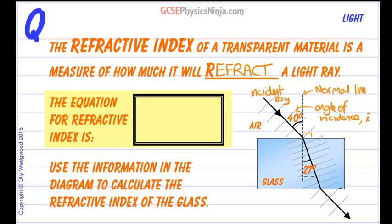And we have the angle of refraction which is down here. The angle of refraction which we're going to call r. And these angles are always measured between the ray and the normal line.